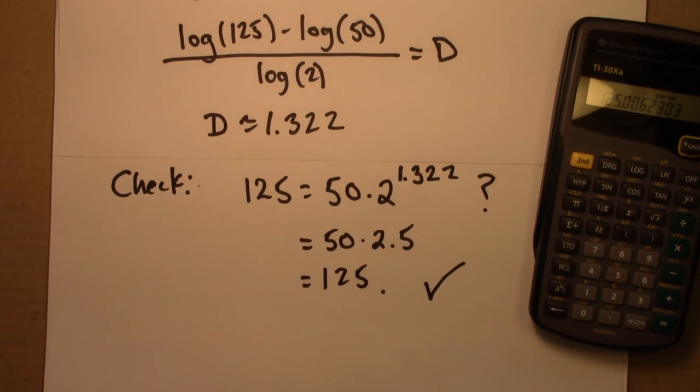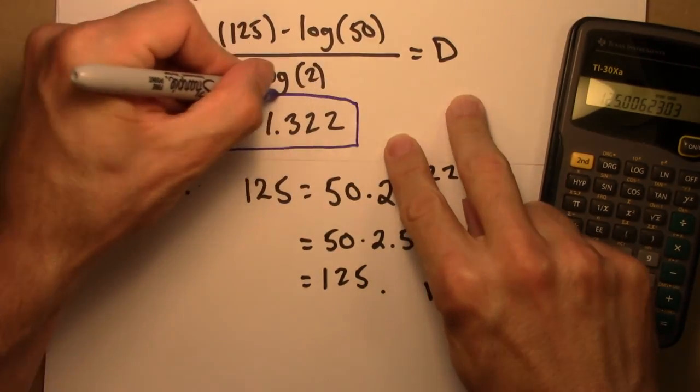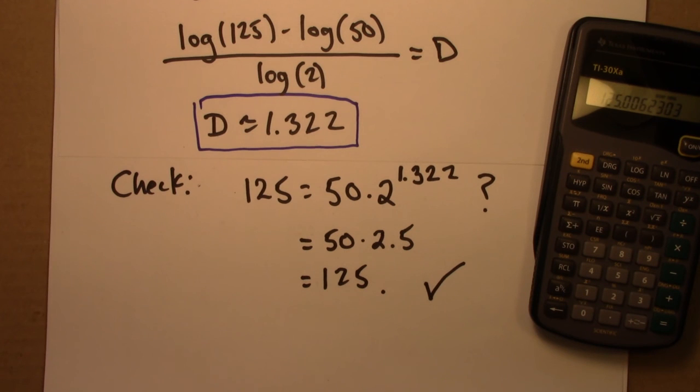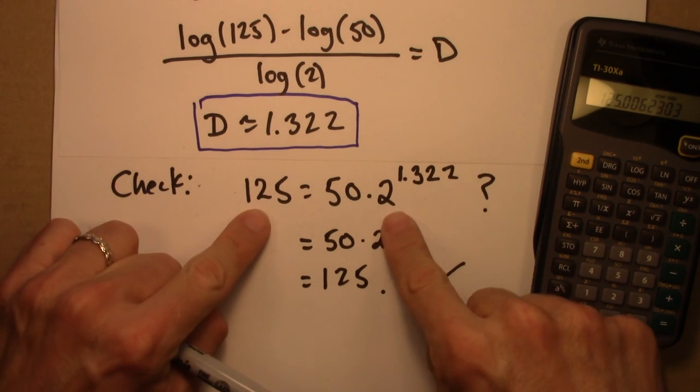So we see that the answer, d is 1.322, is indeed correct. It's correct because it makes the equation true.